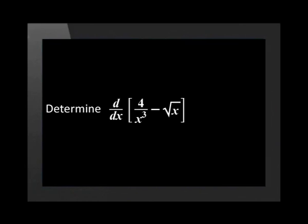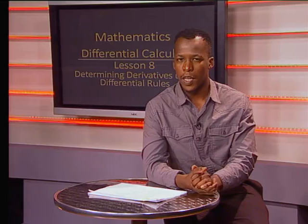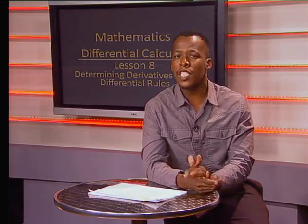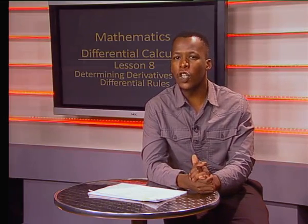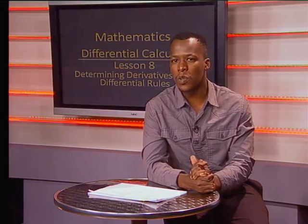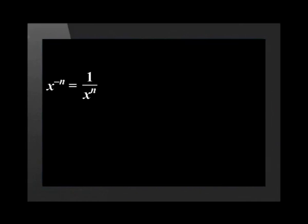Determine the derivative of 4 divided by x cubed minus the square root of x. Can you see how this one might confuse some people? X cubed is in the denominator. In order to find the derivative of the term, we need to put it into the numerator using our laws of exponents: x to the power of minus n is equal to 1 divided by x to the power of n. Therefore, 4 divided by x to the power of 3 is equal to 4 multiplied by x to the power of minus 3.